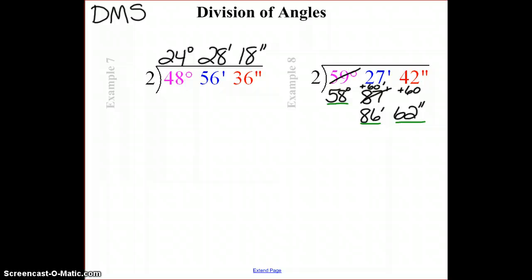Alright, I'm going to take my 58 and cut it in half to get 29 degrees. I'm going to take my 86 and cut it in half to get 43 minutes. And then I will take my 62 seconds, cut them in half to get 31 seconds.